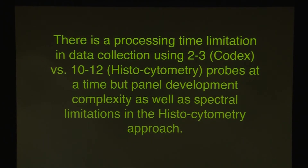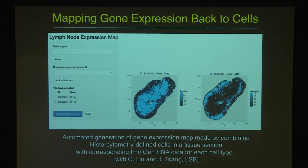There is a throughput problem: if you only do two colors at a time, it can take a long time as tissue samples get larger to build up these images. We can do better staining 10 or 12 at a time, but we pay a price developing a complex multicolor panel with spectral overlaps, which puts limitations on the system. There are pros and cons in each of the different approaches.